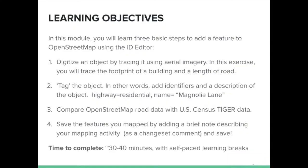In this module, you will learn the basic steps to add a feature to OpenStreetMap using the in-browser ID Editor. You will use aerial imagery to trace a building footprint, tag the object by adding a description of the feature, learn how to compare OpenStreetMap data with TIGER data, and lastly, add a change set comment and save your data to the map. With breaks for self-paced learning, you should be able to complete this module in about 30 to 40 minutes.